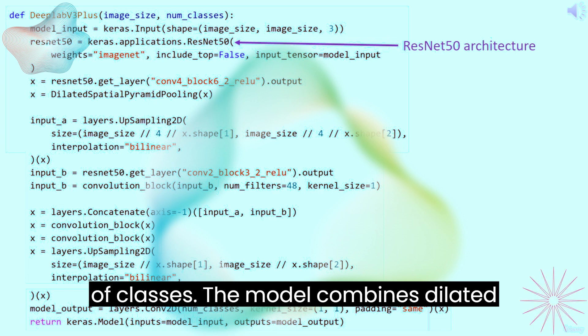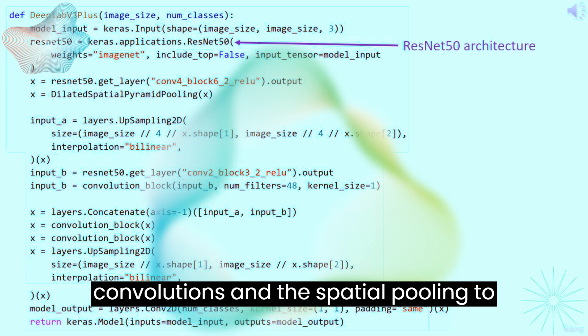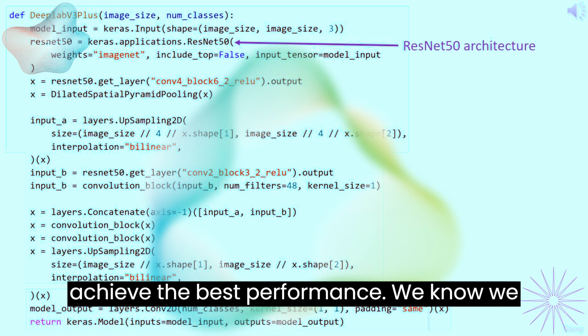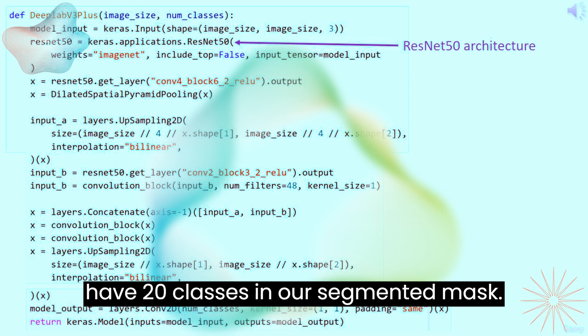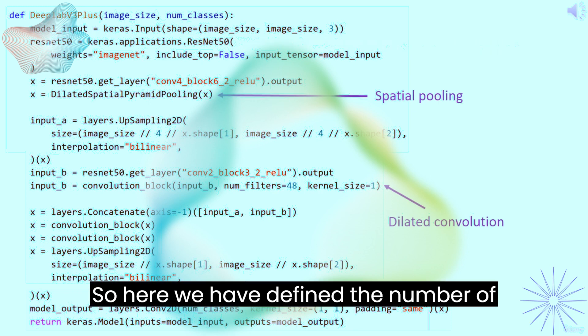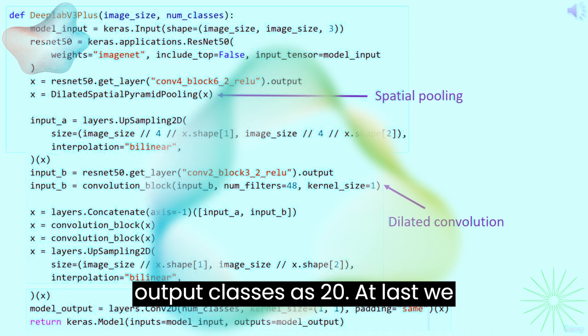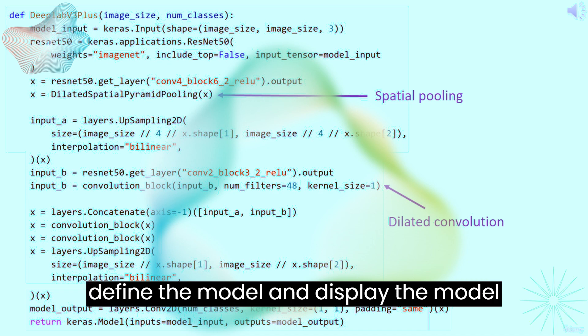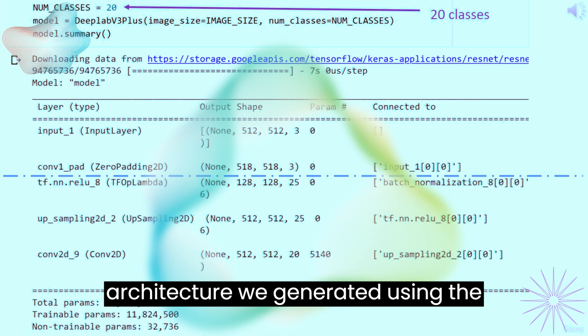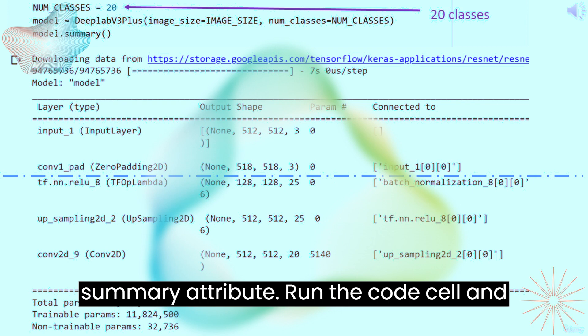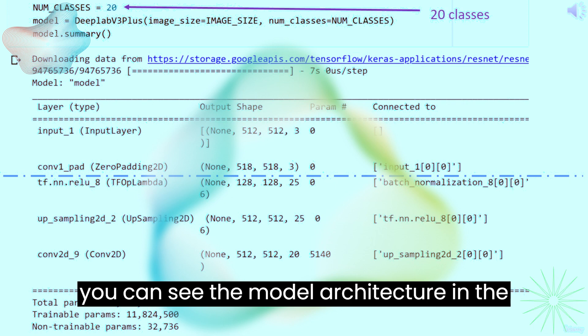The model combines dilated convolutions and the spatial pooling to achieve the best performance. We know we have 20 classes in our segmented mask. So here we have defined the number of output classes as 20. At last, we define the model and display the model architecture we generated using the summary attribute. Run the code cell and you can see the model architecture in the output.